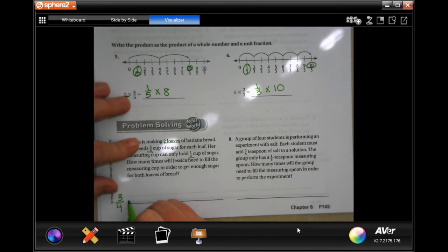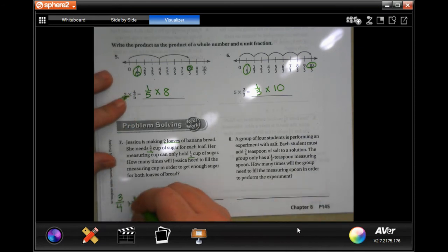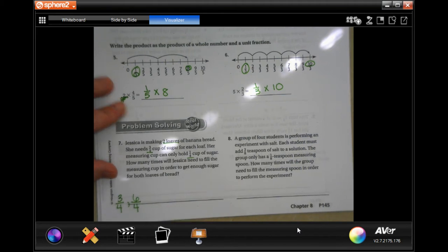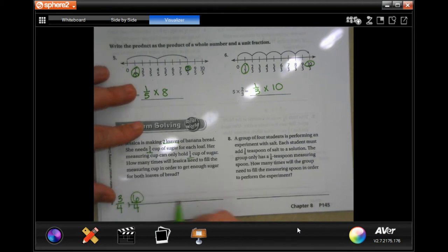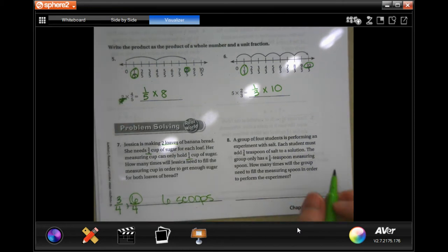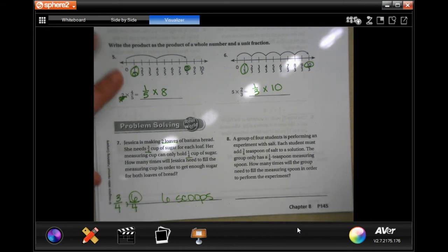Okay, so for the next one we would keep the denominator, right? But we would add that three, so three plus three is six. So six times, six scoops, six one quarter cup servings, six whatever, but six.